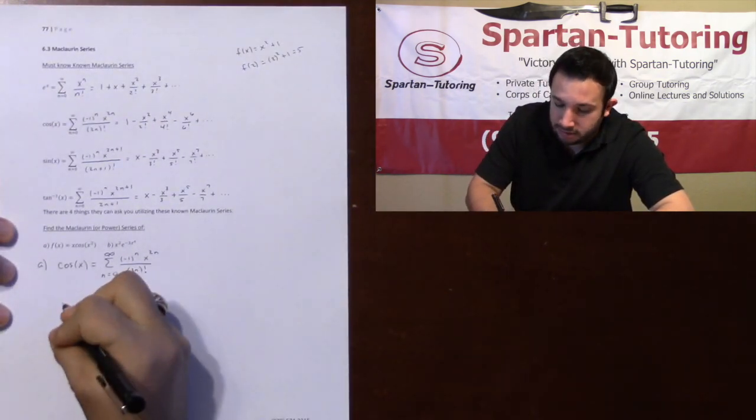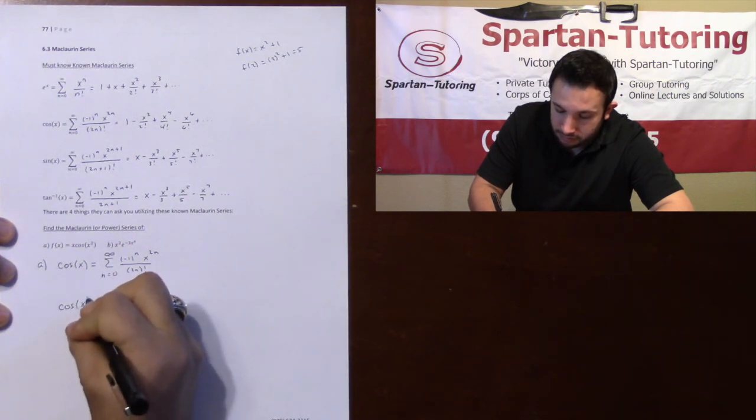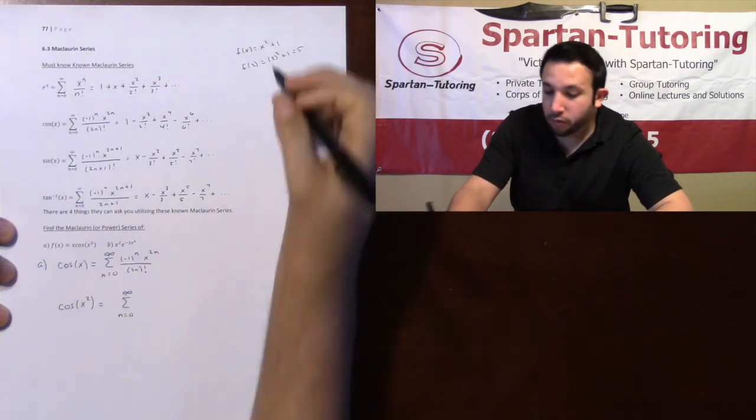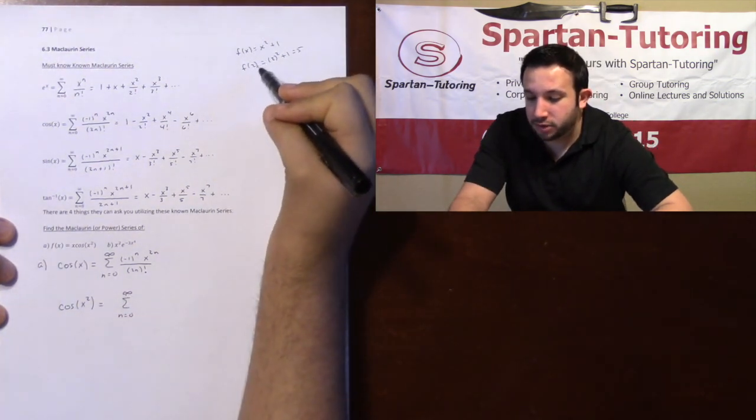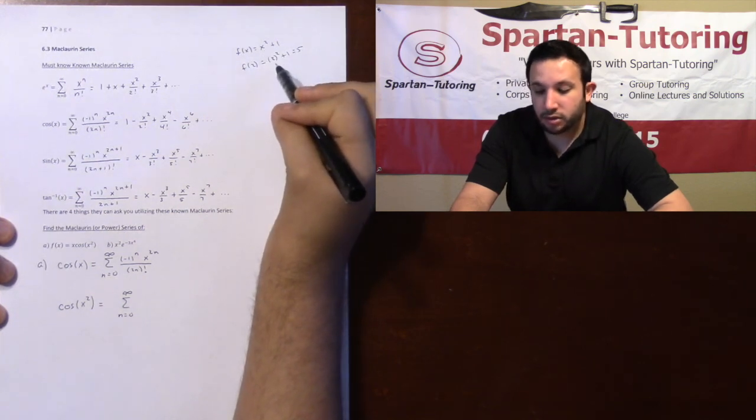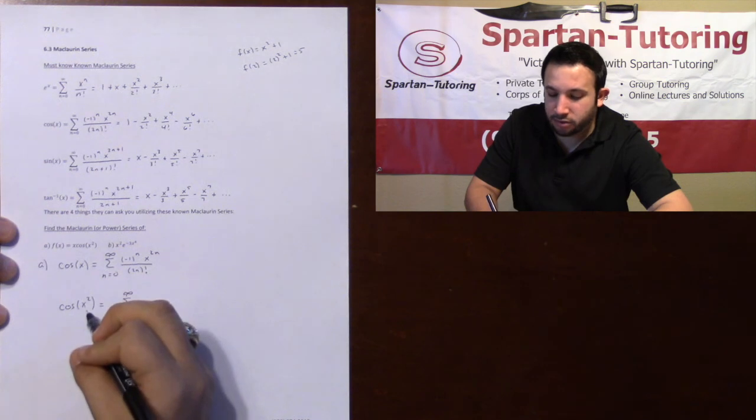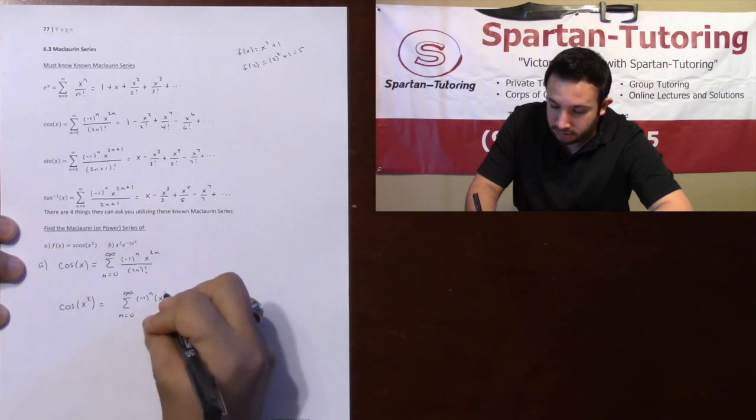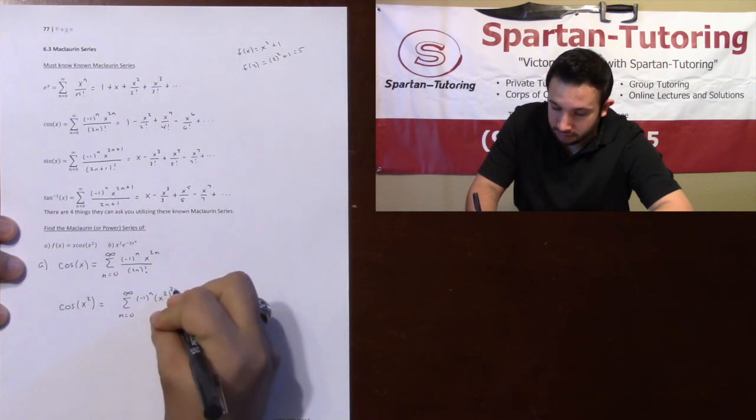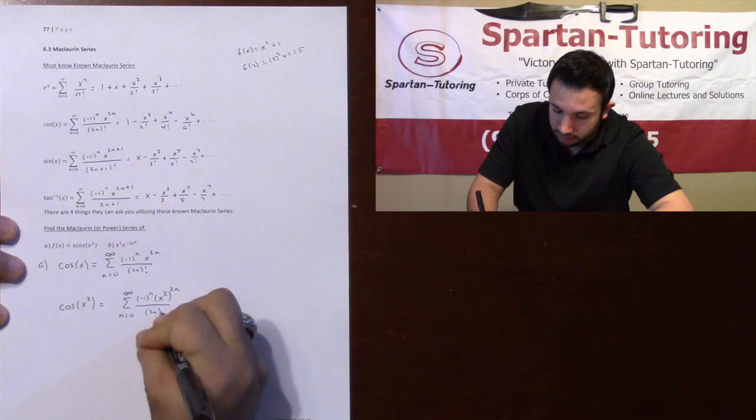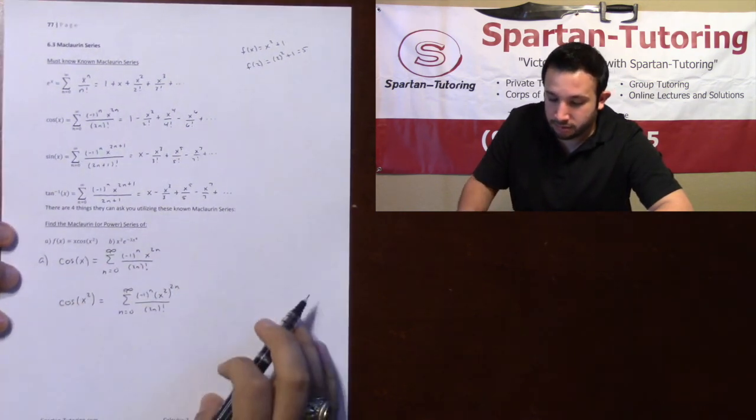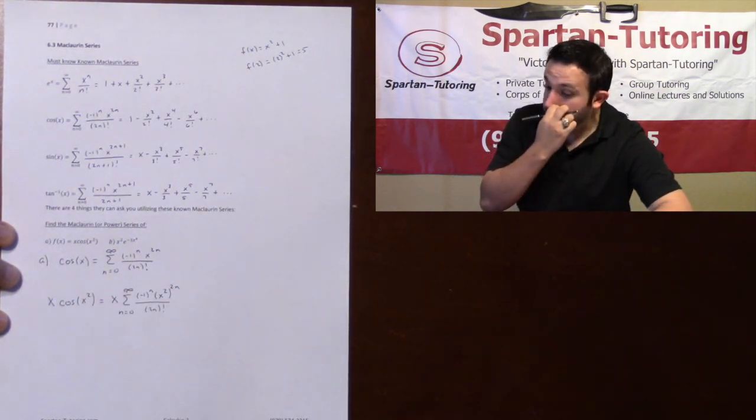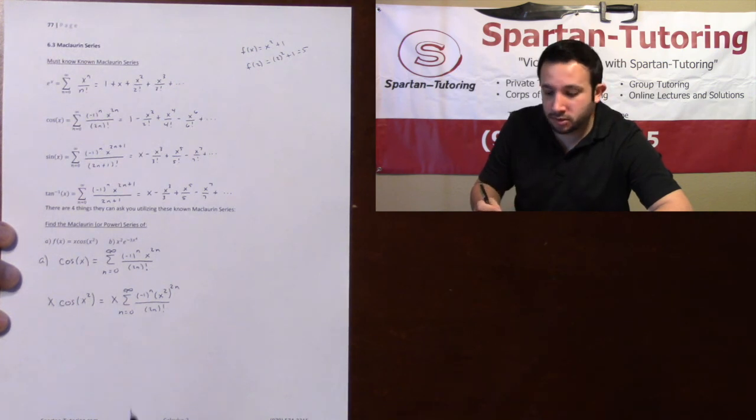Because what I want to do next is I want to find cosine of X squared. What would cosine of X squared be? Well, from here, going from F of X to F of 2, I just replaced every X with a 2. Coming over here, if you have cosine of X and cosine of X squared, all you're going to do is replace every X with an X squared. Now my problem wasn't just cosine of X squared. You had an X in front of that as well. So make sure you put an X in front of your series too.